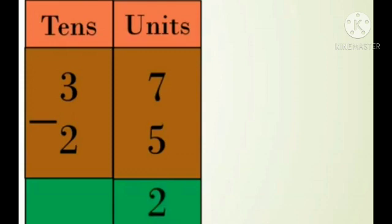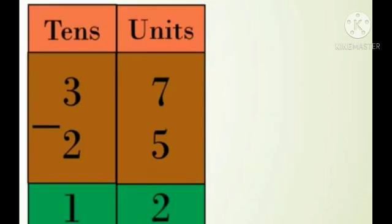Now in the tens column, 3 minus 2 is equal to how much? 3 minus 2 is equal to 1. So 37 minus 25 is equal to 12.